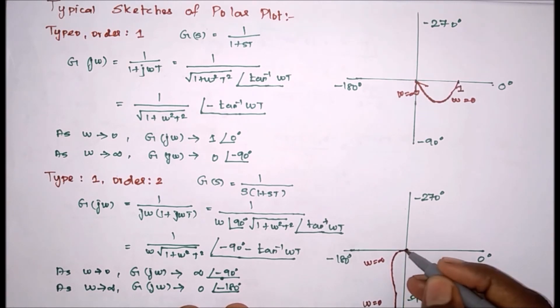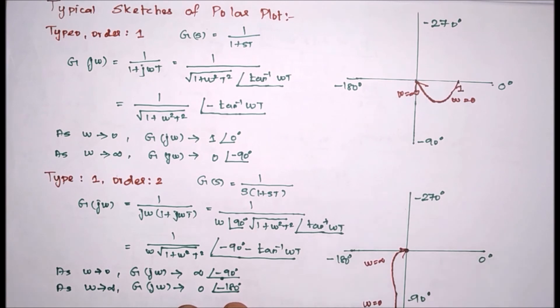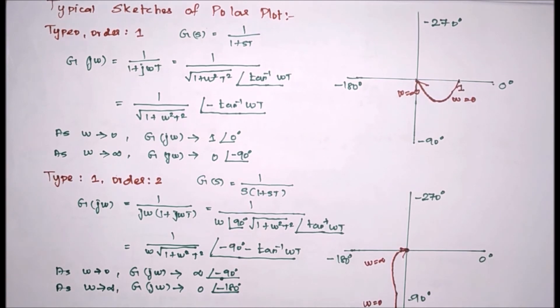It will come and through minus 180 it will reach like this. So this is the structure of polar plot for type 1 order 2 system.